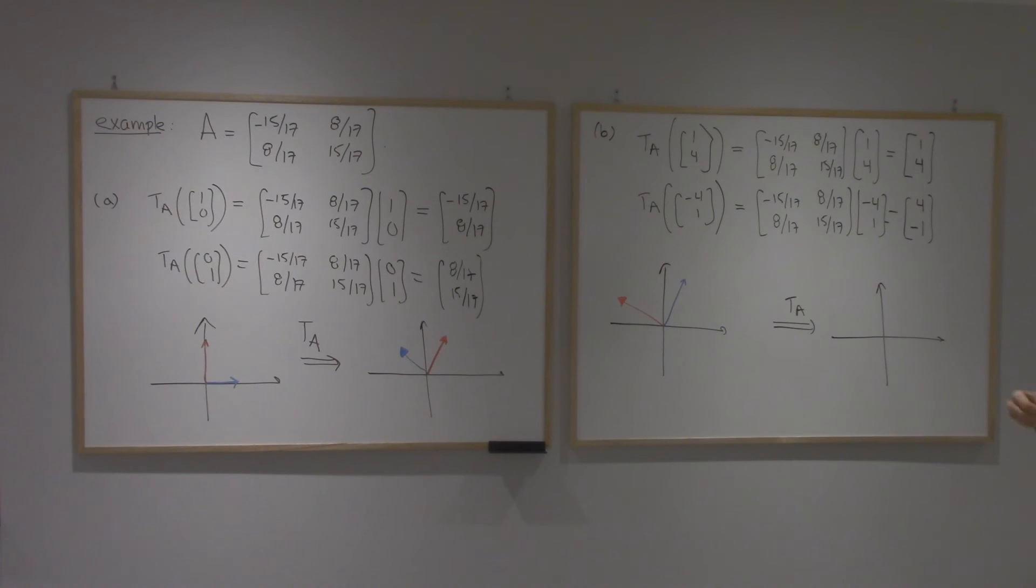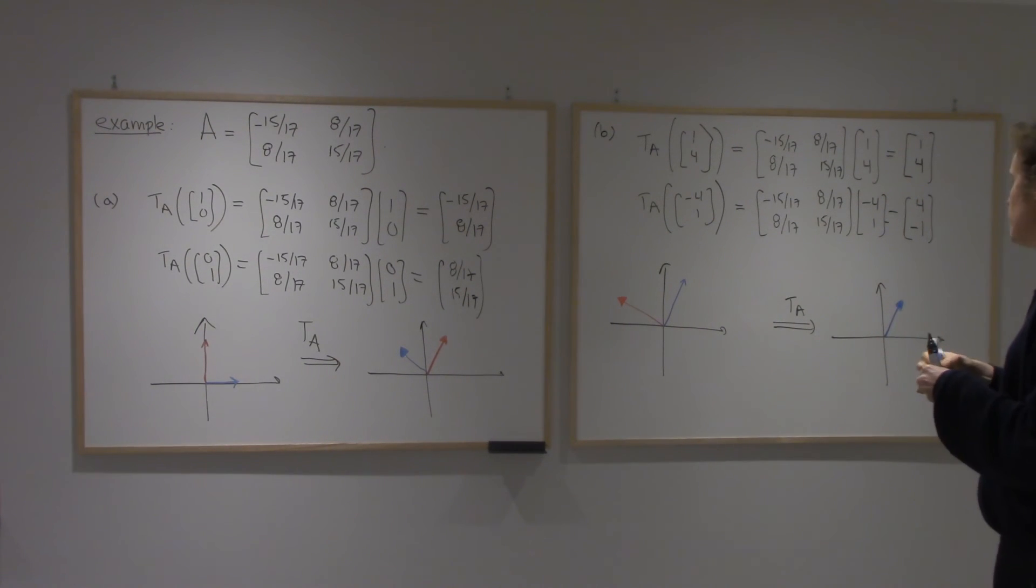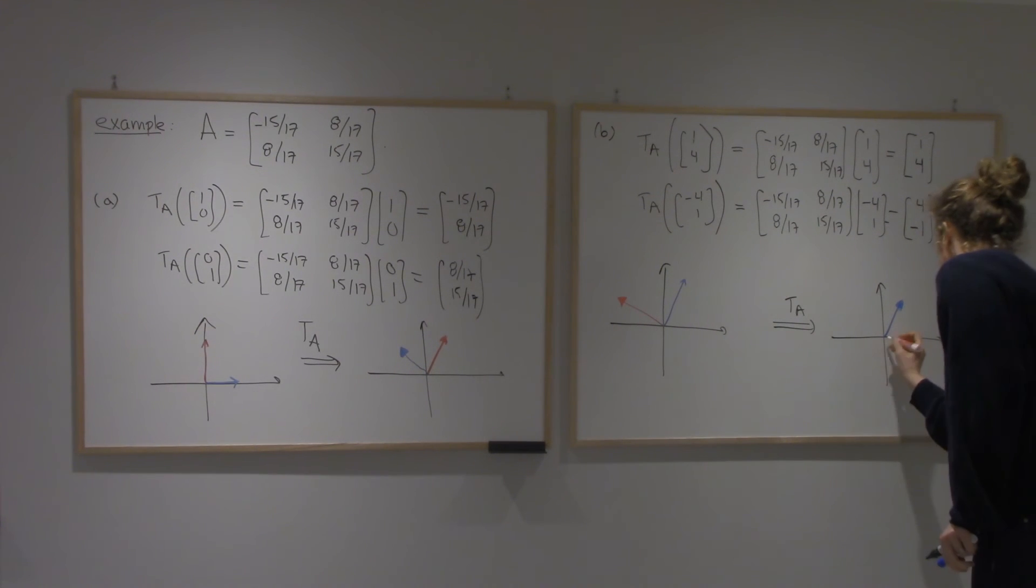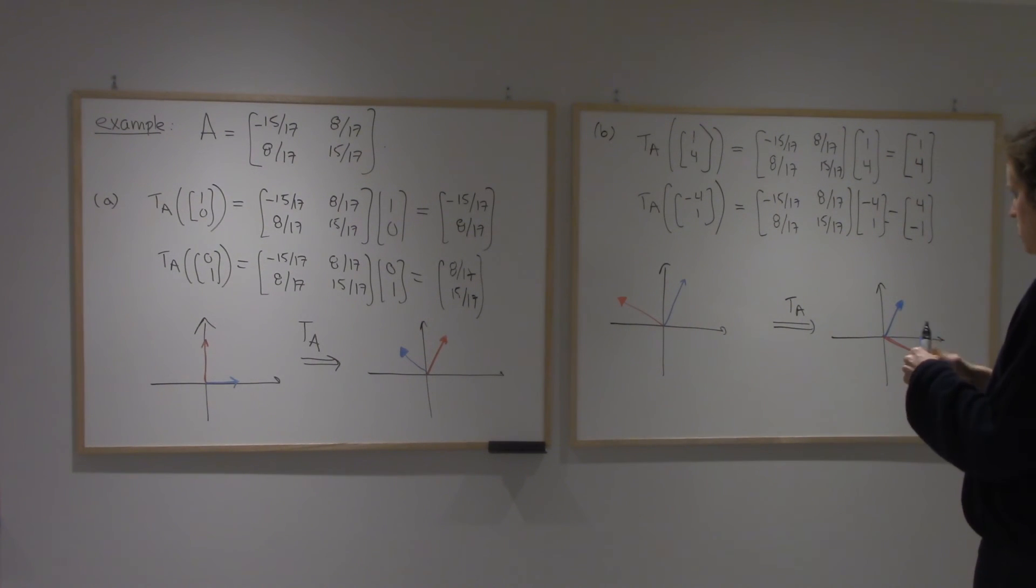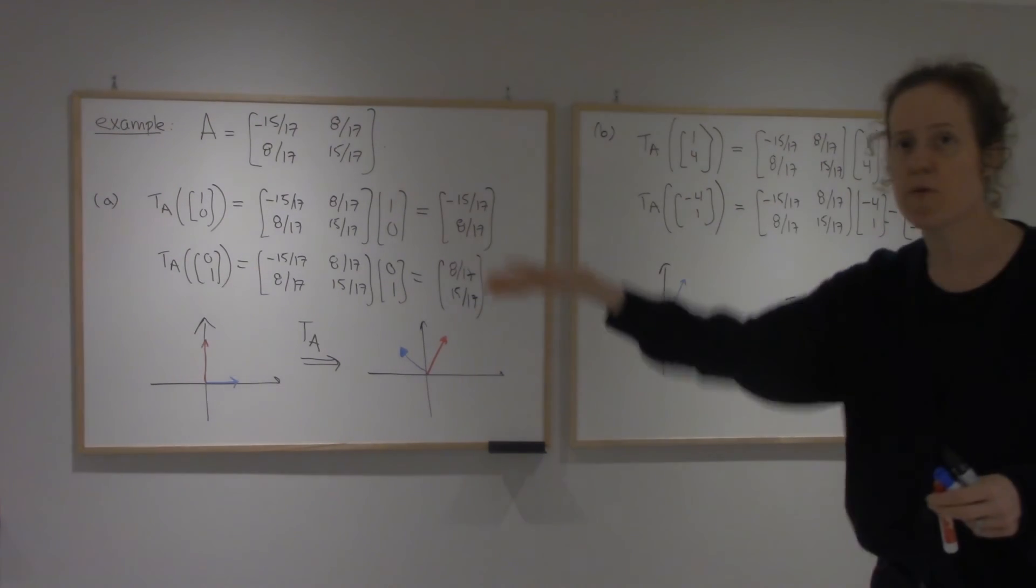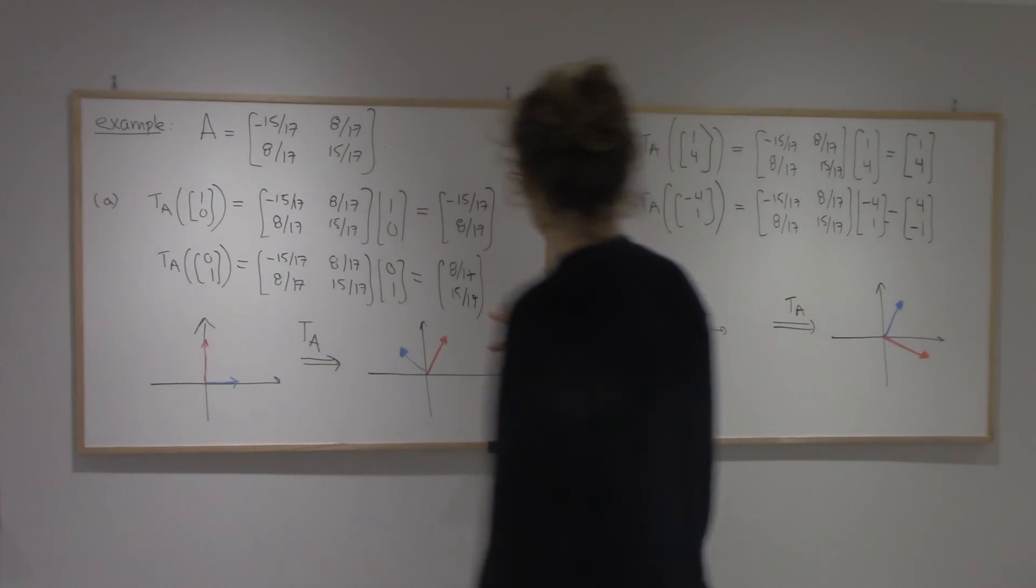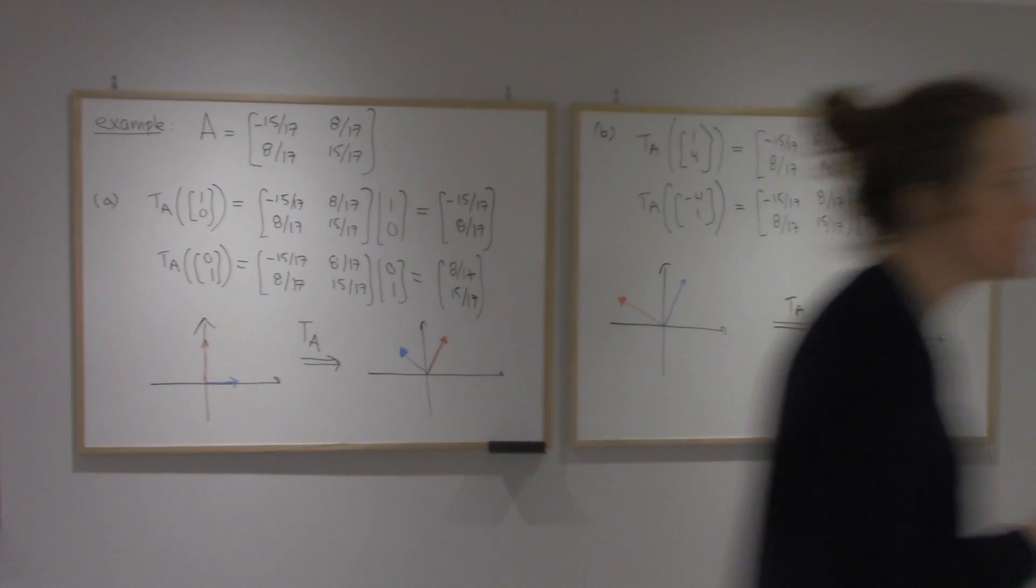(1, 4) is left the same, so 1, 4 will stay right here. And then (-4, 1) will become (4, -1), so that one's flipped. So the first vector stays the same. The other one is flipped. So now we see a reflection. This looked like one, but now we know what it is.